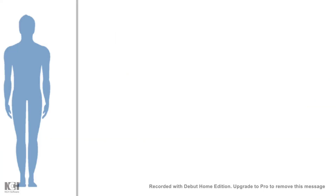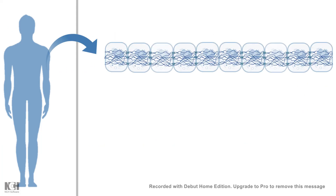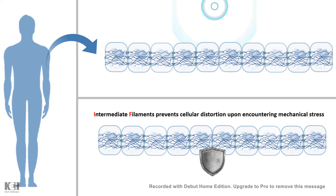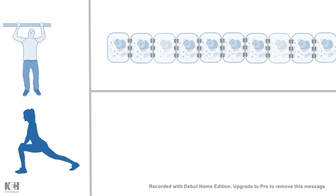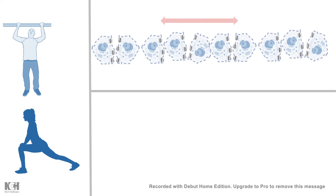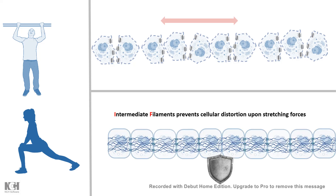Intermediate filaments are mostly found in tissues which undergo a lot of mechanical stress, like our skin. Thanks to these intermediate filaments, our skin is protected from mechanical stress or damage. Imagine you're doing a pull-up in the morning or stretching your legs — your skin is facing a lot of stretch forces. If these intermediate filaments were not there, this stretch force would create breakage in the epithelial layer, which would be detrimental. They prevent any kind of cellular distortion upon stretching forces or mechanical perturbation.